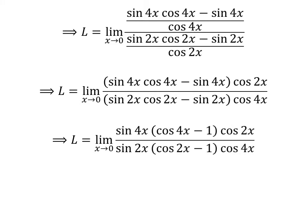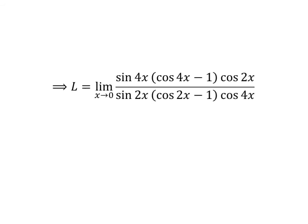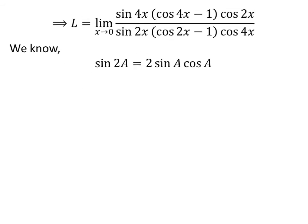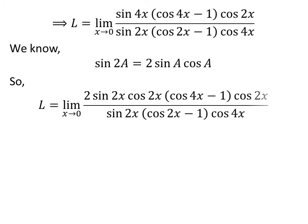Here I have taken out the common factor sine of 4 times x in the numerator and sine of 2 times x in the denominator. We know sine of 2 times a is equal to 2 times sine of a times cosine of a. The verification of the identity has been explained in the video appearing in the upper right corner; the link is also given in the description. Application of the above identity gives us L is equal to limit of 2 times sine of 2 times x times cosine of 2 times x times cosine of 4 times x minus 1 times cosine of 2 times x, upon sine of 2 times x times cosine of 2 times x minus 1 times cosine of 4 times x, as x approaches 0.